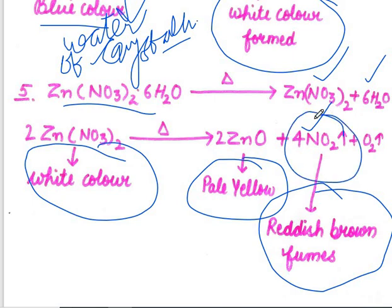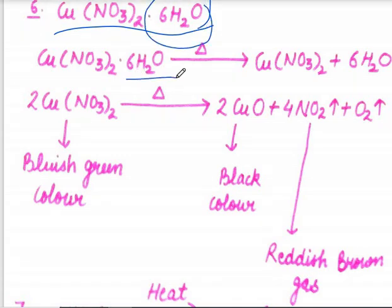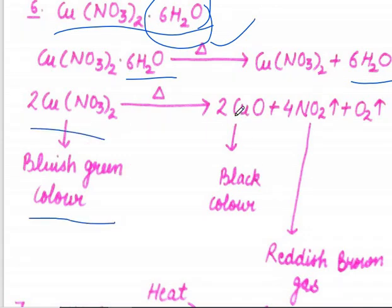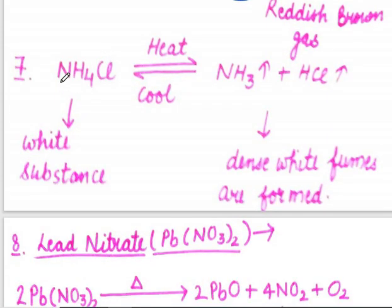Next is copper nitrate, which also has six water molecules of crystallization. On heating, the water molecules are released on the side wall of the test tube first. Then the bluish green copper nitrate converts into CuO, which is a black color substance, along with the release of NO2 gas, which is a reddish brown gas.